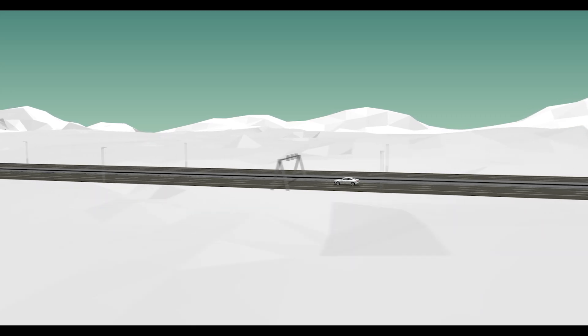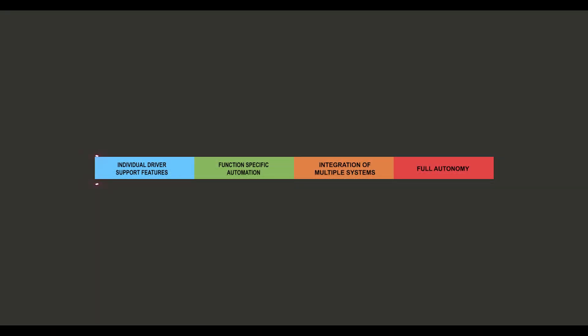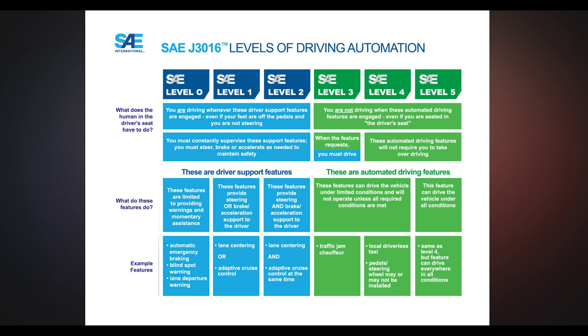Human error is a major contributing factor in motor vehicle accidents. So no matter how safe a vehicle is, one thing manufacturers can't control is driver error. Or can they? In this tech tip, I'm going to introduce you to the classifications or levels of advanced driver assist systems, or ADAS.